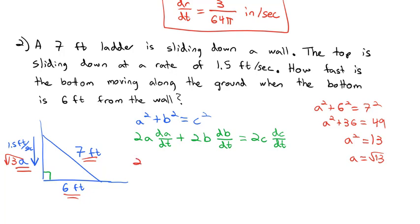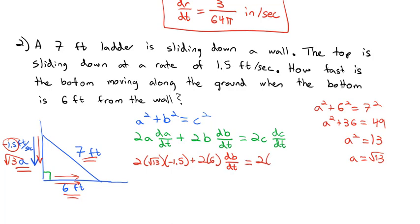Plugging into the formula: 2 times A, which is √13, times dA/dt. A is going down, so it's negative — dA/dt equals negative 1.5. Plus 2B, where B is 6, times dB/dt, which is what we're looking for. Equals 2C, where C is 7 feet. The ladder's length isn't changing at all — it's always 7 feet — so dC/dt equals 0.